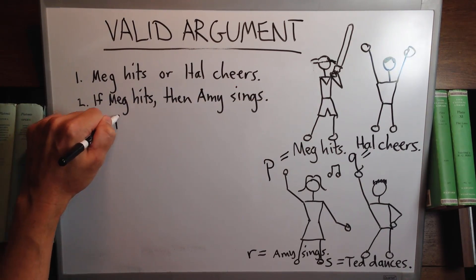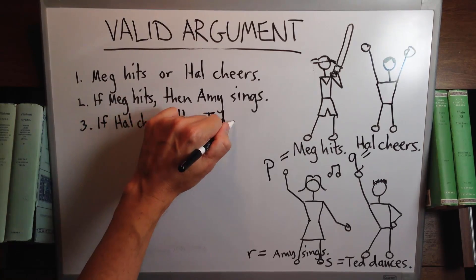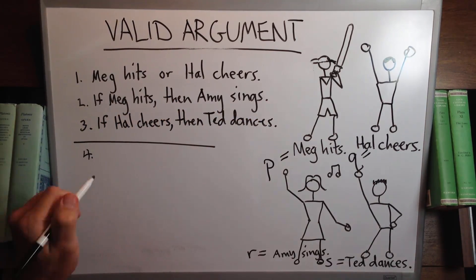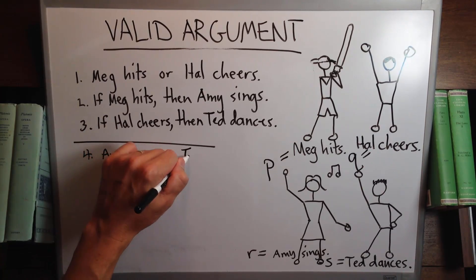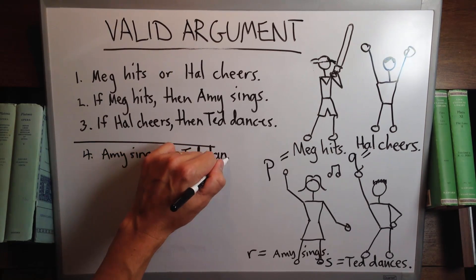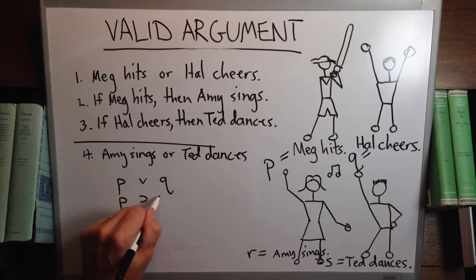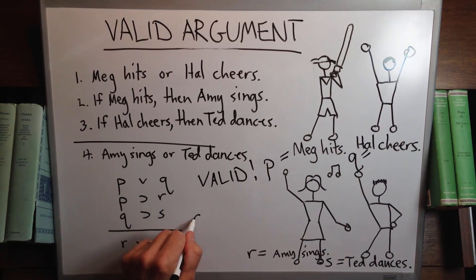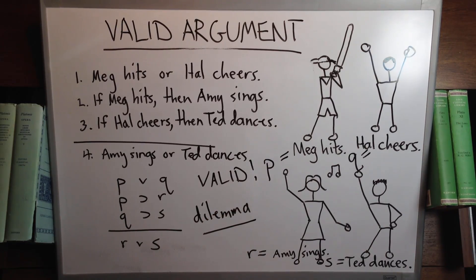Let's stick with our first premise: Meg hits or Hal cheers, and then add 'if Meg hits then Amy sings' and 'if Hal cheers then Ted dances.' Then we infer Amy sings or Ted dances. The form is: P or Q; if P then R; if Q then S; therefore R or S. It's a valid form called a dilemma.